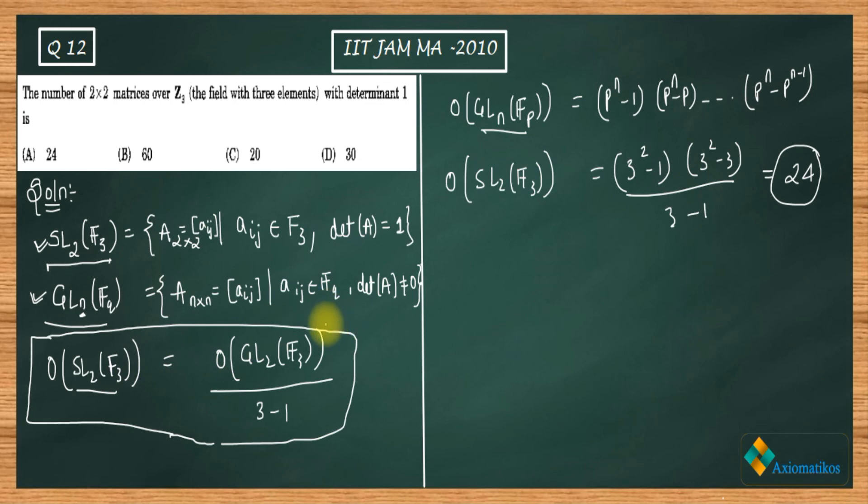I am assuming that you know a little bit of abstract algebra, so you already know these two groups. I am just defining here their formula. Using this formula, you can solve this question in just one minute.